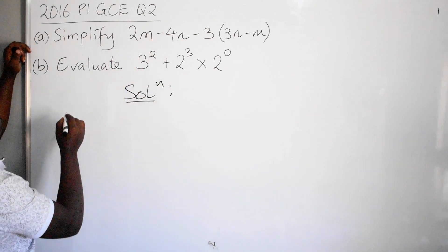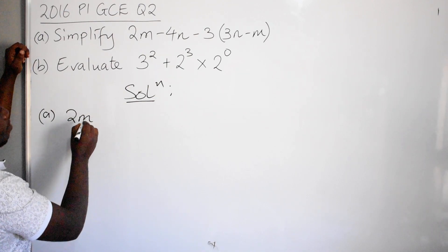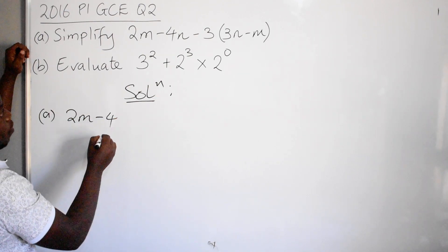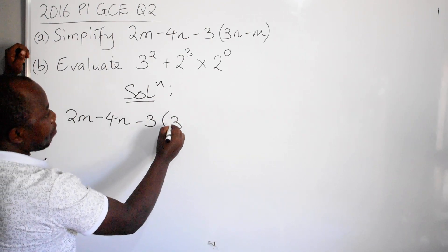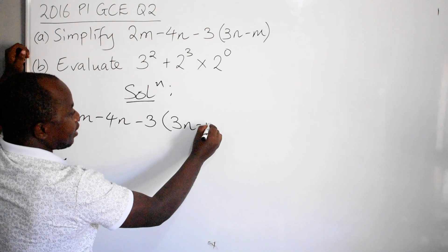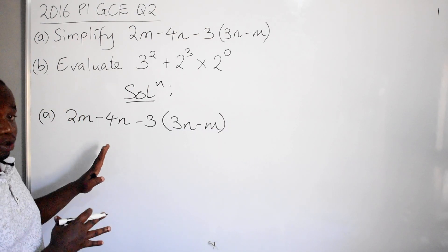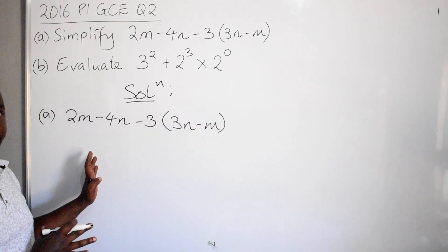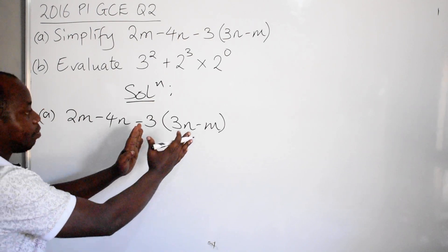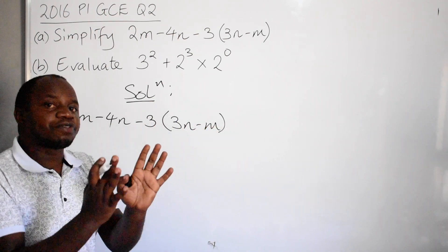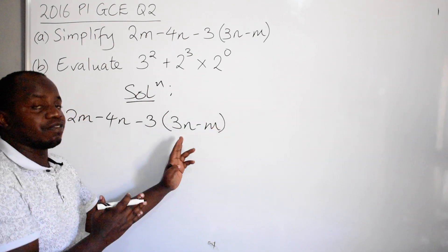Simplify. You copy the question the way it is: 2m minus 4n minus 3, in brackets 3n minus m. This is algebra — an algebraic expression. The moment you are given an algebraic expression that has brackets, start from there. You start from there so that you get rid of the brackets.